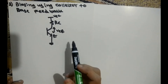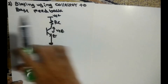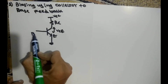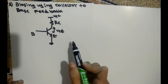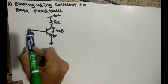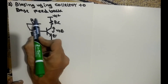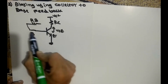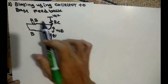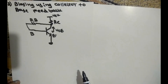Here we are doing biasing using collector to base feedback. This portion is the base, and we are giving a feedback resistance from base to collector. We use one resistance named RB because it is connected to the base, with one end at the base and the other end connected to the collector, so it acts as a feedback between collector and base.